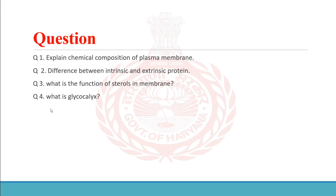Here are a few questions that may come in exams on this topic: first, explain the chemical composition of the plasma membrane — may come in three or five marks; second, difference between intrinsic and extrinsic protein — most frequently asked; third, what is the function of sterol in membrane — one or two marks; fourth, what is glycocalyx — one mark. Study from previous year questions for more. In part three, we will study the function of the plasma membrane.